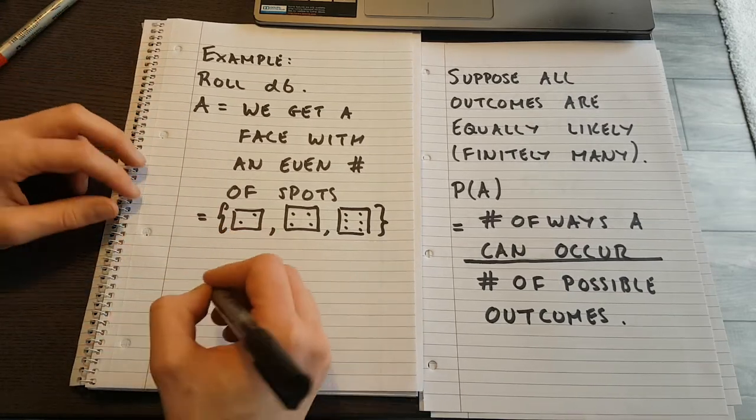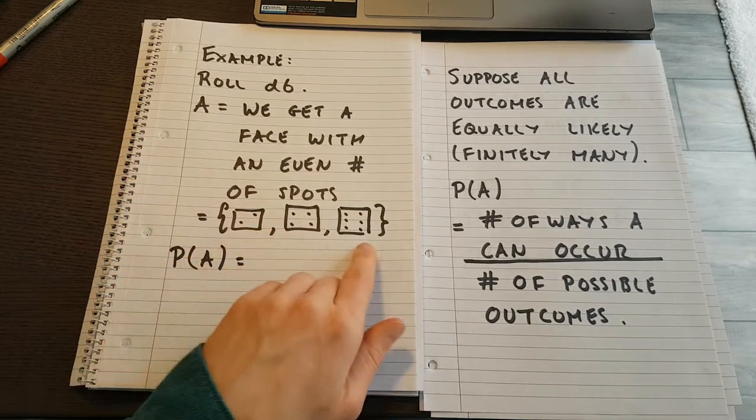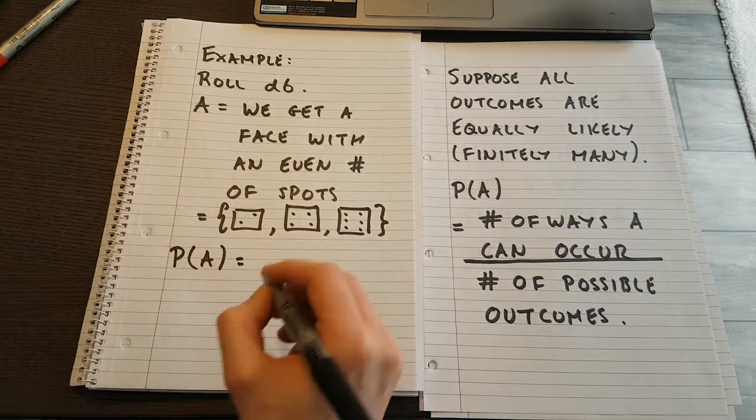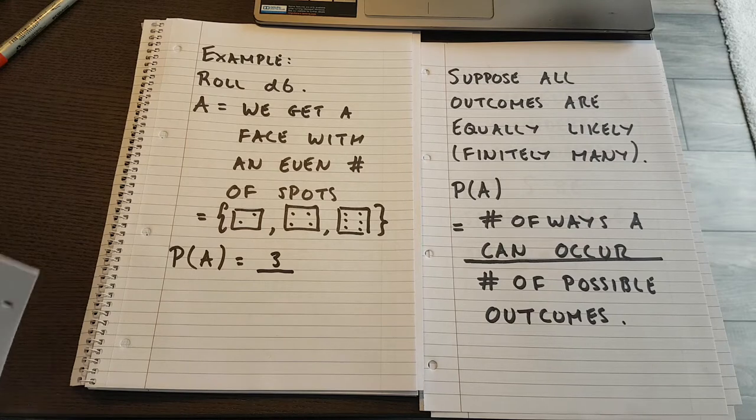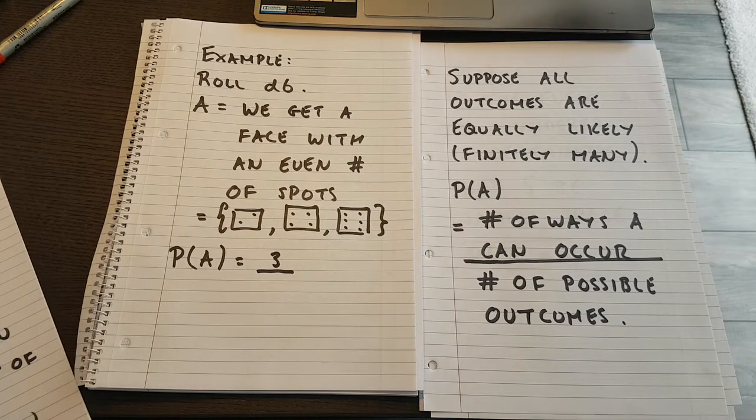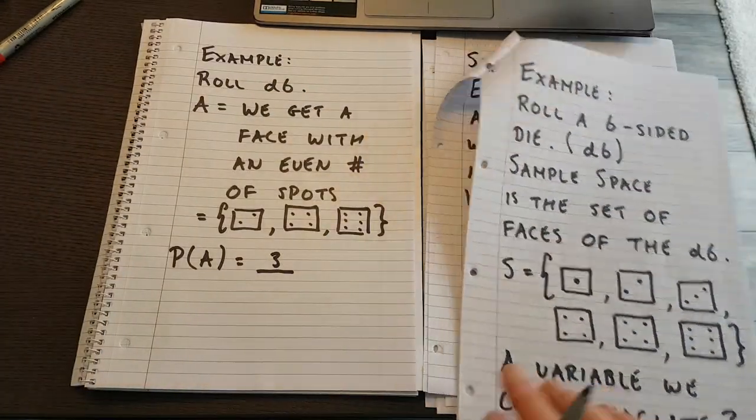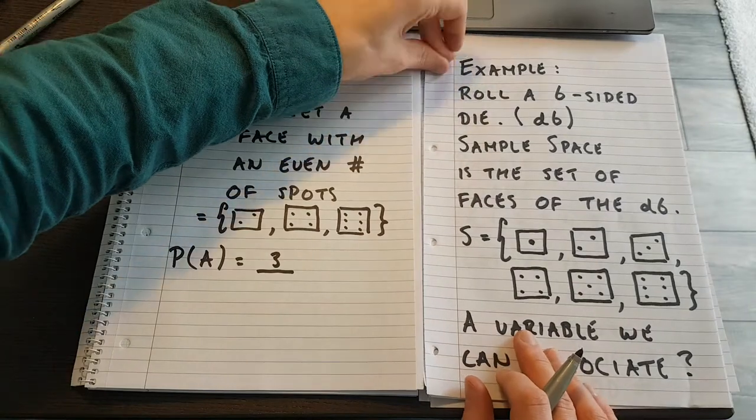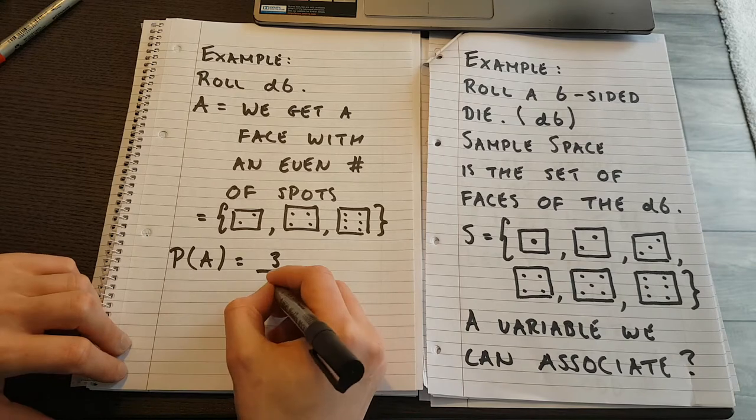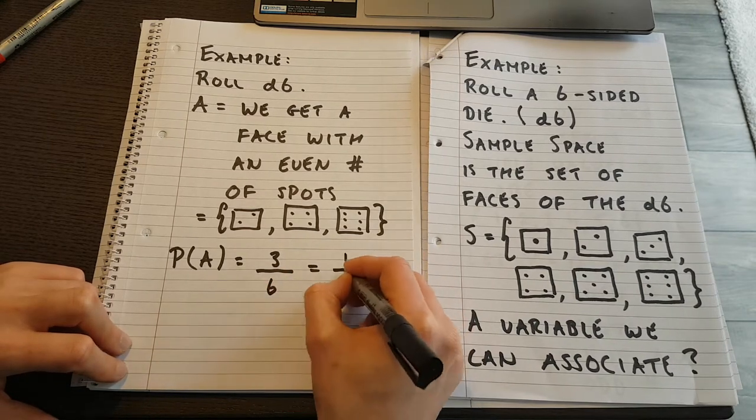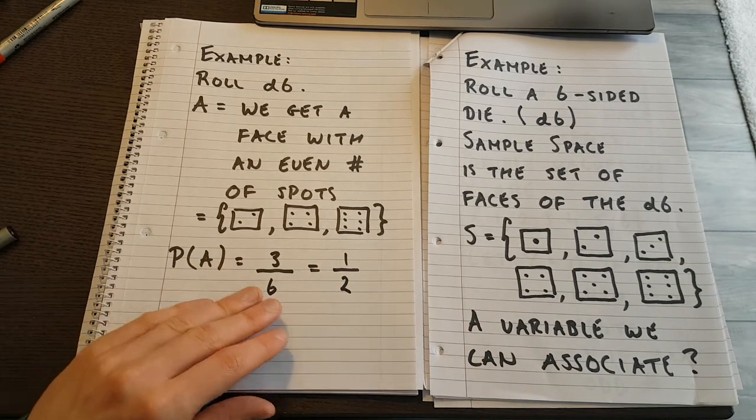And now, the probability of A then, is what? It's the number of ways that A can occur, which is three. The number of total possible outcomes. We saw this before. Let me just bring up the set here. From the previous lecture, that is my total sample space. And we can see that there are one, two, three, four, five, six possible outcomes. So that would be three and six, which would be one half.